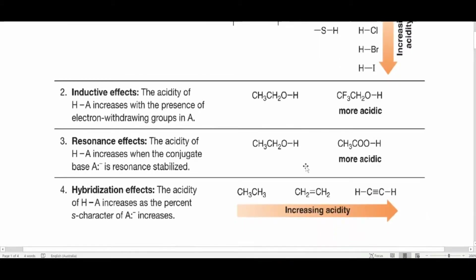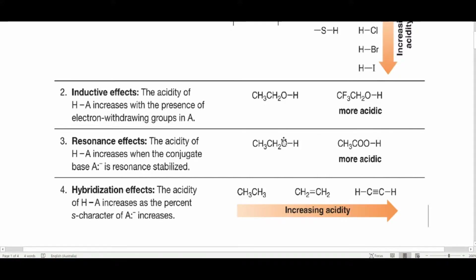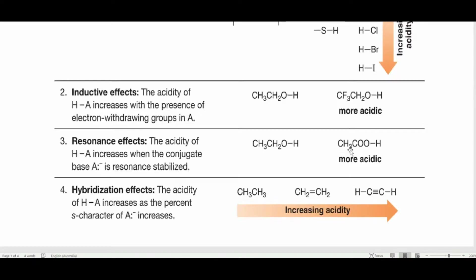The third effect is the resonance effect. If resonance is involved, the compound will be more acidic. The most common example is alcohol versus phenol — phenol has more resonance structures, and the oxygen's lone pair in phenol is involved in resonance with the benzene ring. In alcohol, the lone pair of oxygen is not involved in any resonance, which is why alcohol is less acidic. Carboxylic acid is also more acidic than alcohol because it possesses resonance.